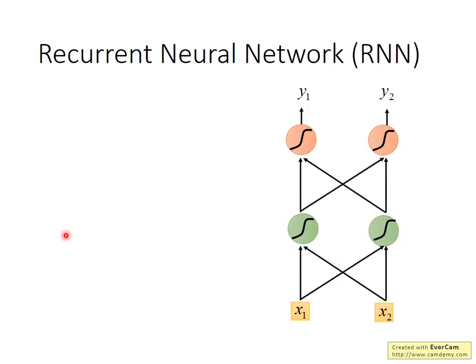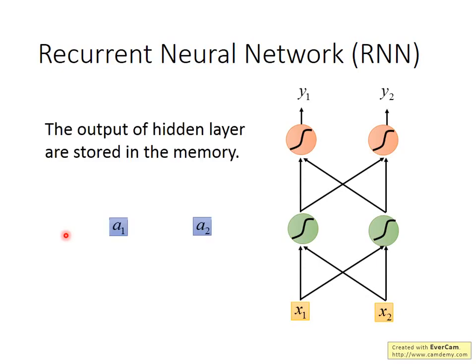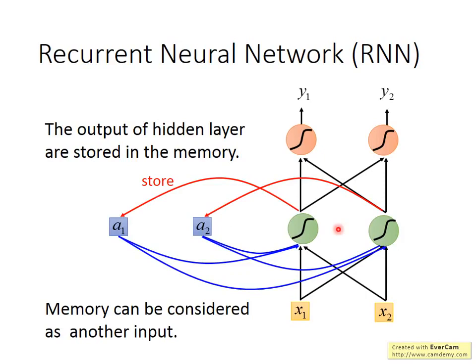This kind of neural network with memory is called Recurrent Neural Network, abbreviated as RNN. In the RNN, every time the neurons in the hidden layer produce outputs, those outputs are stored in memory — represented here as blue squares. Next time, when there are inputs, these neurons consider not only the inputs x1 and x2, but also the values stored in memory, a1 and a2, which will also affect the output.